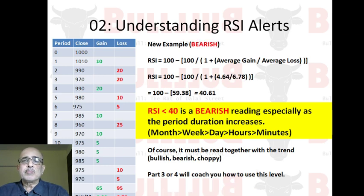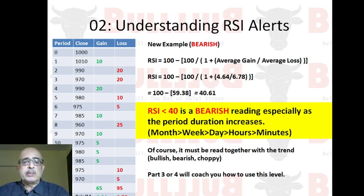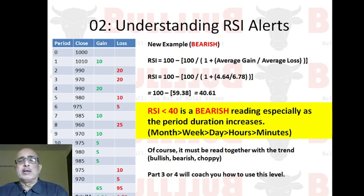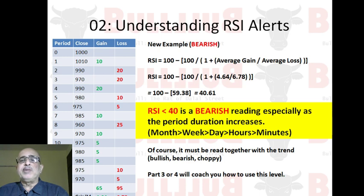Now for bearish levels: I've created another example where losses outstrip gains — losses are 95, gains are 65 — giving an average of 4.64 gain and 6.78 losses, resulting in an RSI value of 40.61. RSI below 40 is a bearish reading. The same condition applies: the longer the time period, the more potent the bearish reading. As with the bullish indicator, it should be read together with the trend, which I'll also show you how to work in future videos.